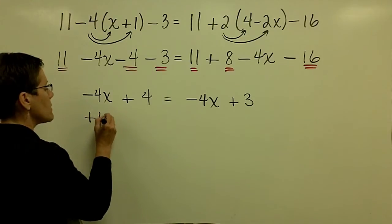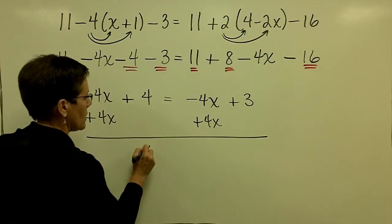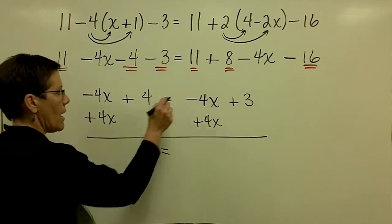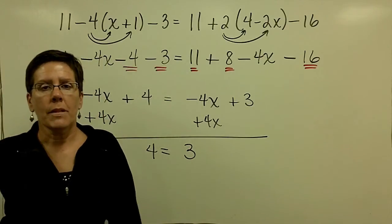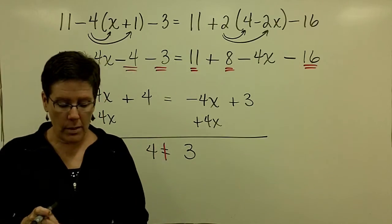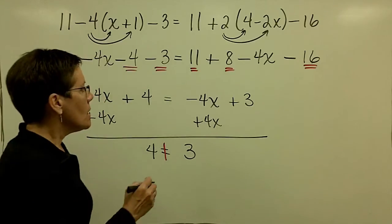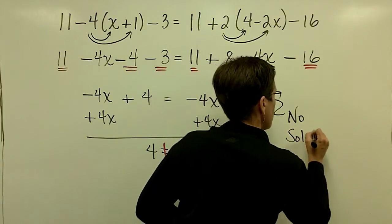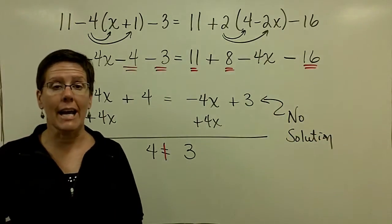But let's say you didn't notice it. What I would probably do next is I would add 4x to both sides of the equation, and all of a sudden I'd start getting nervous because I'd say, oh, I was trying to isolate the variable x, and I lost the variable x totally. It's gone. And on top of that, I have a statement that is not true. The number 4 does not equal the number 3, and I've lost the variable. This problem has no solution.